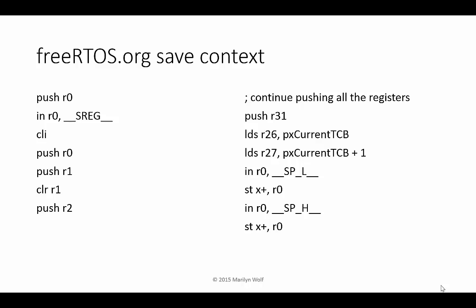Here are some important parts of the code that saves context. It first saves the PC and the status registers, then saves the rest of the registers. TCB stands for context control block, which is another name for an activation record. So pxCurrentTCB is a pointer to the activation record for the currently running process. All the register values, including the PC and the status bits, are stored in that record.